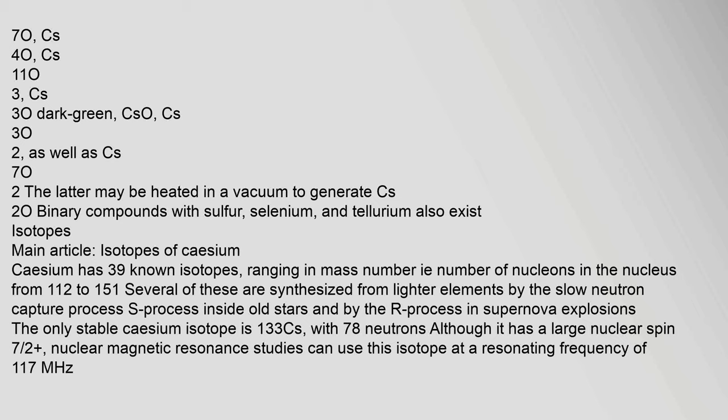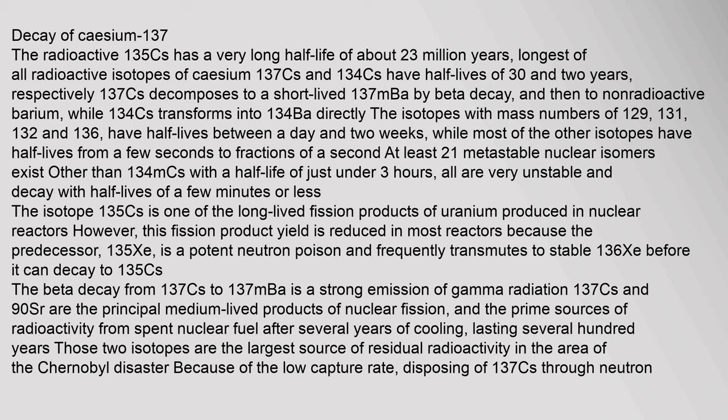Caesium has 39 known isotopes ranging in mass number from 112 to 151. Several of these are synthesized from lighter elements by the slow neutron capture process (s-process) inside old stars and by the r-process in supernova explosions. The only stable caesium isotope is ¹³³Cs, with 78 neutrons. Although it has a large nuclear spin of seven-halves, nuclear magnetic resonance studies can use this isotope at a resonating frequency of 117 MHz. The radioactive ¹³⁵Cs has a very long half-life of about 2.3 million years.